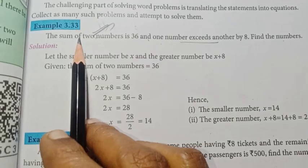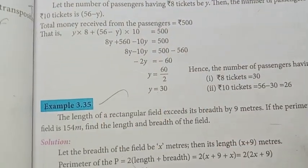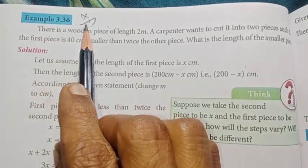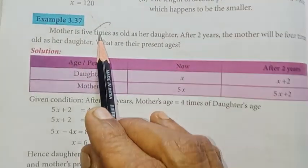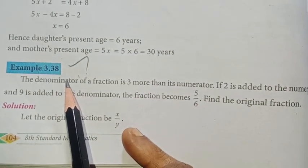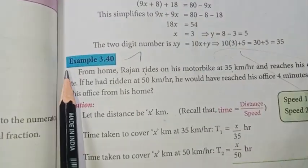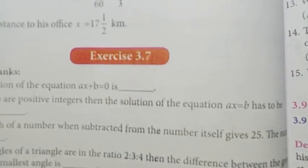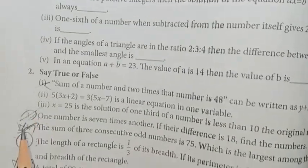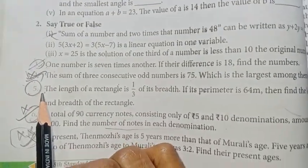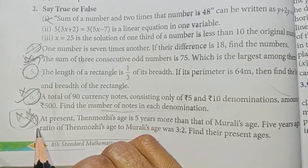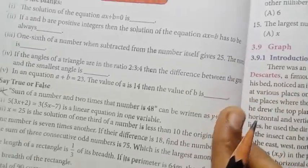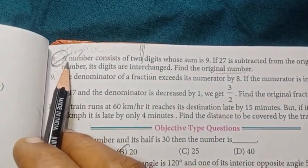Page 103: example 3.33 important. Example 3.35 important, page 104 example 3.36 — two district previous year. Example 3.37 important, example 3.38 important. Page 105: example 3.40 important question. Exercise 3.7: third question important; questions 4, 5, 6, 7, and 8.1 also important — 8.1 is one district.